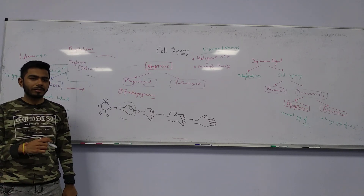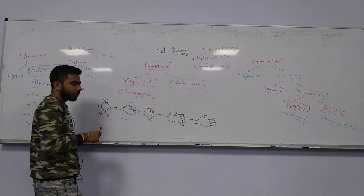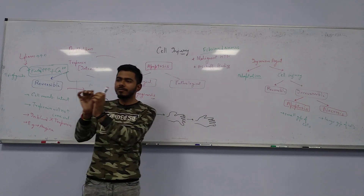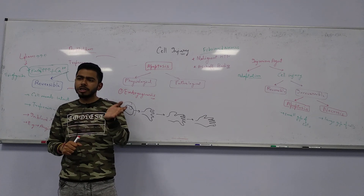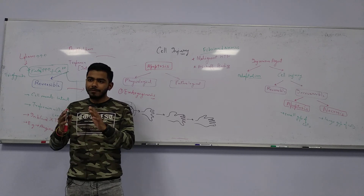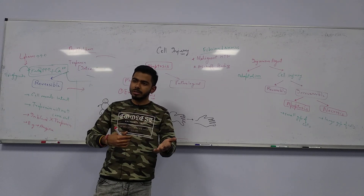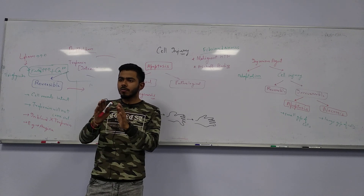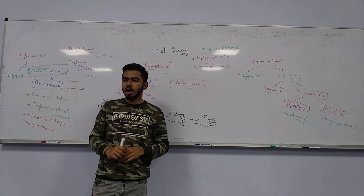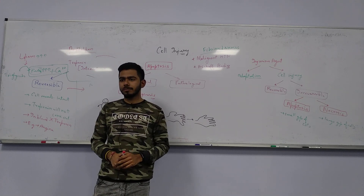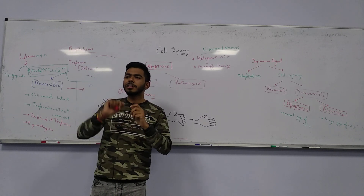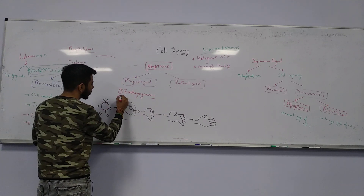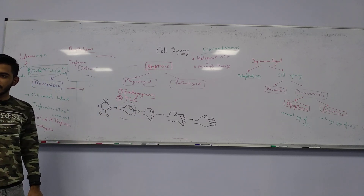Another example: leukocyte count. If somebody has an infection, the leukocyte count will be elevated. After giving antibiotics, bacteria will be suppressed and you overcome that situation. Now the leukocyte count will decrease — how? By apoptosis of those elevated leukocytes. Is this physiological or pathological? Physiological. So total leukocyte count regulation is also an example of physiological apoptosis.